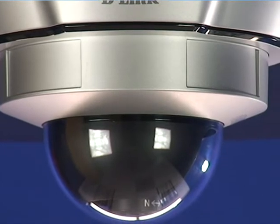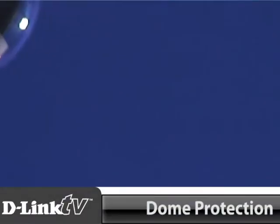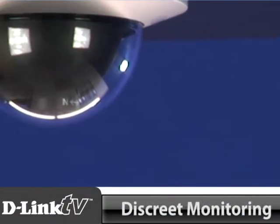The D-Link Fixed Dome Network Camera, otherwise known as the DCS-6110. You don't have to worry about someone or something tampering with this camera. The dome protects it and makes monitoring discreet.